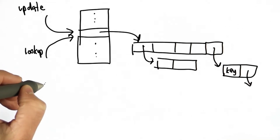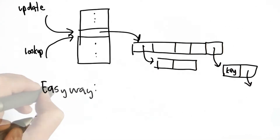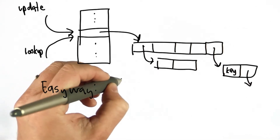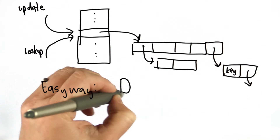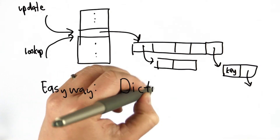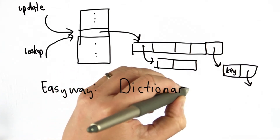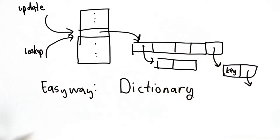Now that we've built it ourselves, I'm going to show you the easy way to do it, which is to use the built-in Python type called the dictionary. What a dictionary is, is really an implementation of a hash table. It's built into Python, so it's much easier to use than defining our own hash table.